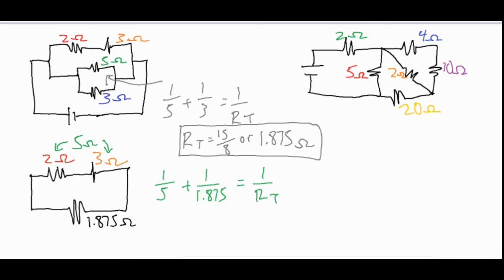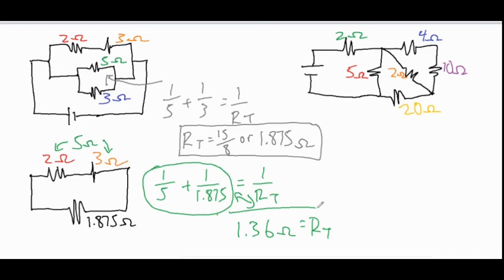I'm going to put this into my calculator, sum the numbers up, and cross-multiply to find R_T. One divided by that sum gives an R_T of 1.36 ohms — our total equivalent resistance for that entire circuit. To summarize: take your smallest parallel chunks, collapse them to a single resistor, redraw, combine as needed, and keep collapsing until you end up with a single series circuit you can add directly.